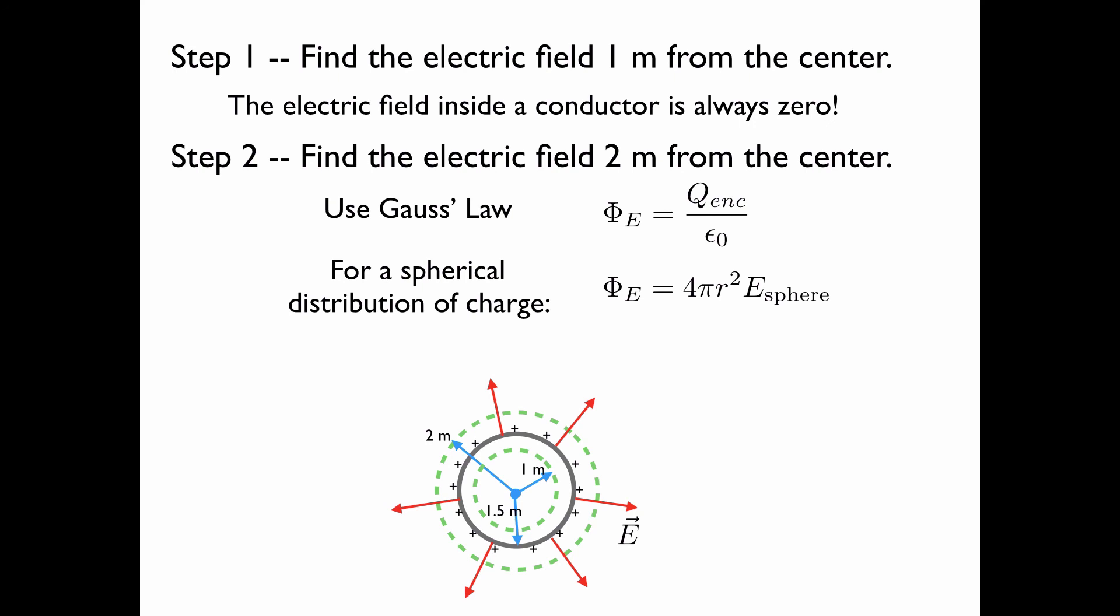In our analogy with wind passing through a ring, we have the wind speed, which is like the electric field, and then the total area of the ring that the wind is passing through.